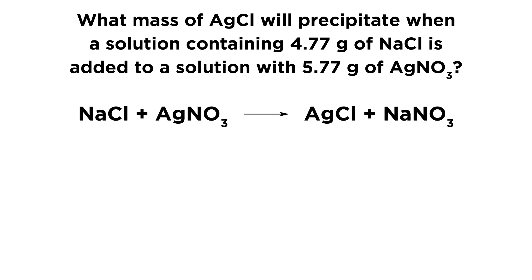The first thing we want to do is go ahead and write out the chemical equation. It's always good to write out the chemical equation so we can see exactly what we're dealing with and visualize things — that's going to be the best way to set ourselves up to do stoichiometric calculations. So we have sodium chloride reacting with silver nitrate, since we have a solution containing sodium chloride being added to a solution of silver nitrate.